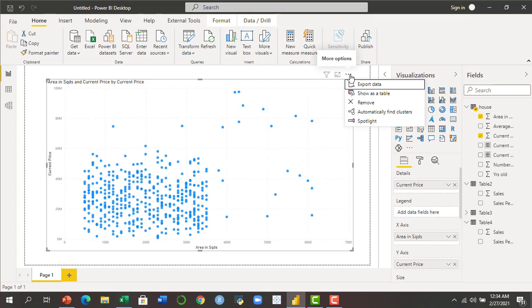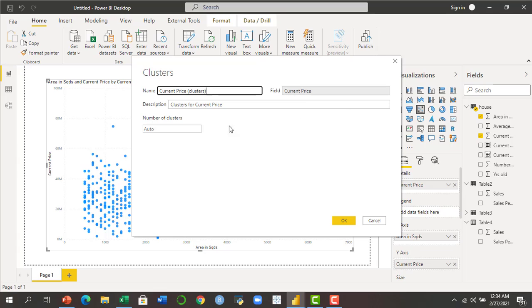So when you click on these three dots which is more options, you will find the option available that is automatically find clusters. So click on this and here either you can define the number of clusters you want - three, four, five - or let the system identify for you with auto.